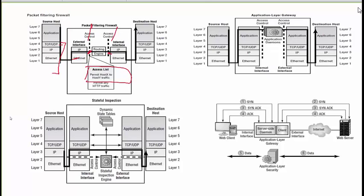Application level gateway works from Layer 3 to Layer 7. Its major function is not just routing — it has knowledge of different applications and how they work, and provides security based on that application-level understanding. For example, F5 is one application level gateway because it can understand and protect traffic based on the protocols being used.